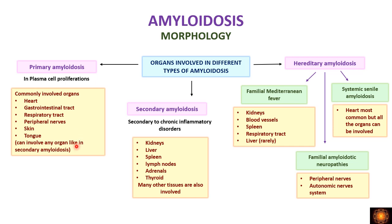Other organs in primary amyloidosis include peripheral nerves, skin, and tongue. Later it can involve any organ. In secondary amyloidosis, the thoracic organs seen in primary amyloidosis — heart, lung, and GIT — are spared, while other organs are involved: kidneys, liver, spleen, lymph nodes, adrenals, and thyroid. In later stages all organs can be involved.